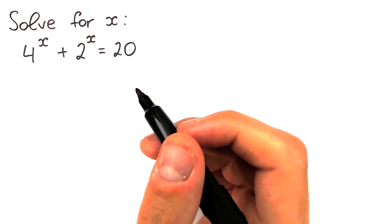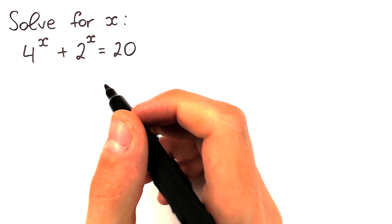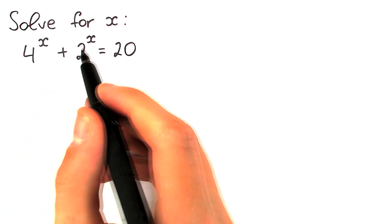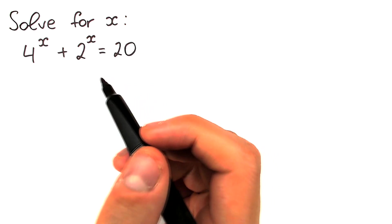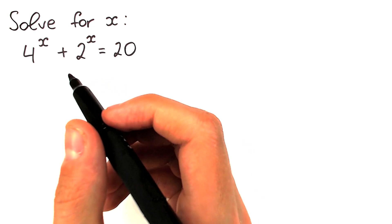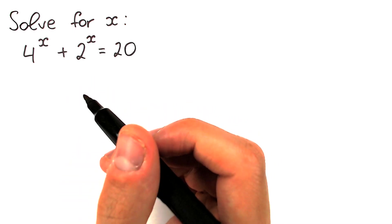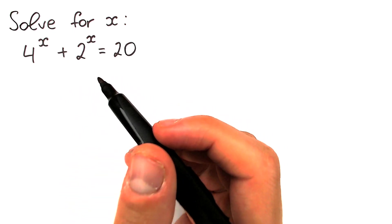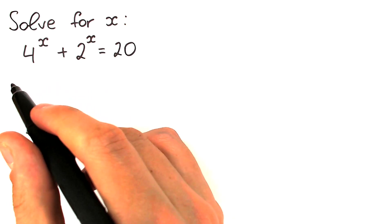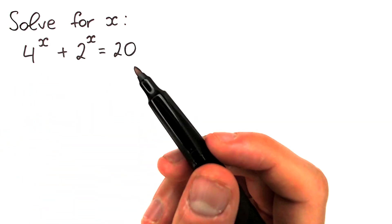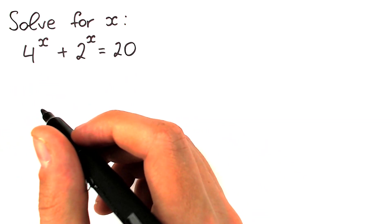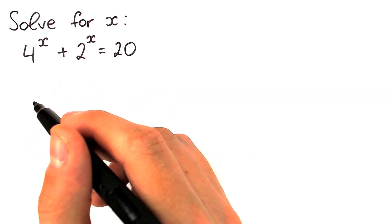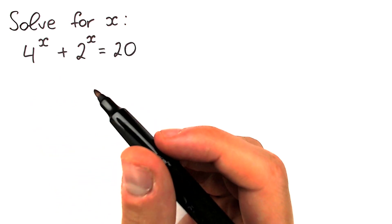Hello everyone, happy to see you here on my channel Higher Mathematics. We have a really interesting math challenge today: 4 to the power x plus 2 to the power x equals 20. A lot of students solve this by inspection, but in math we should know the correct solution. We can't solve this in just one line, so in this video I'm going to fully explain how to solve this interesting challenge.